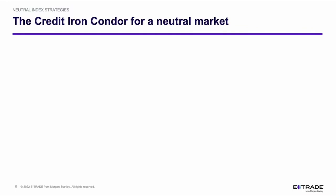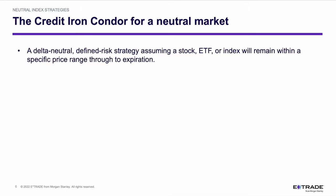Earlier I referenced a couple of neutral option strategies. In this case, we're going to talk about one that's my favorite — the credit iron condor for a neutral market. First of all, a credit iron condor is delta neutral, meaning it's a non-directional strategy. It's also defined risk, which means my loss potential is not unlimited — there is a defined amount of money that I could lose if the trade goes bad.